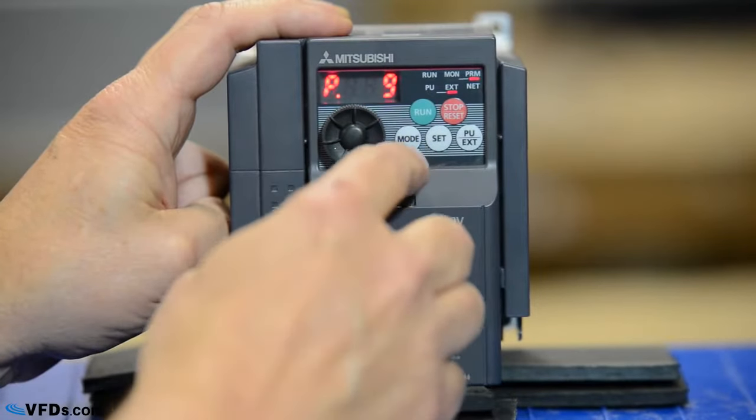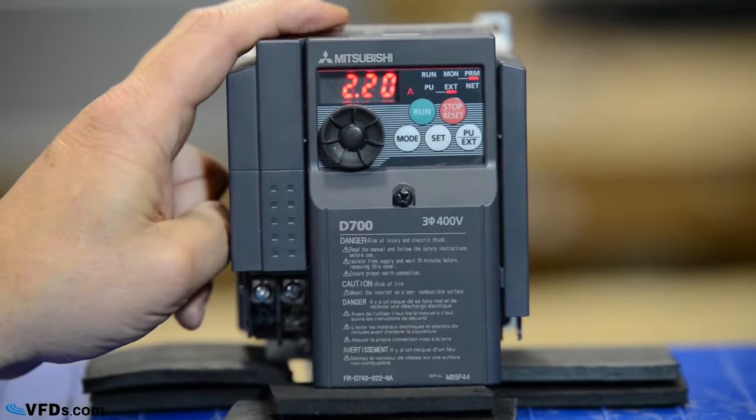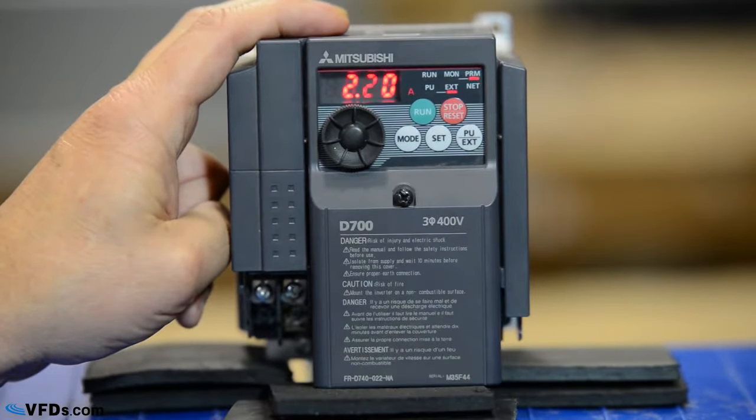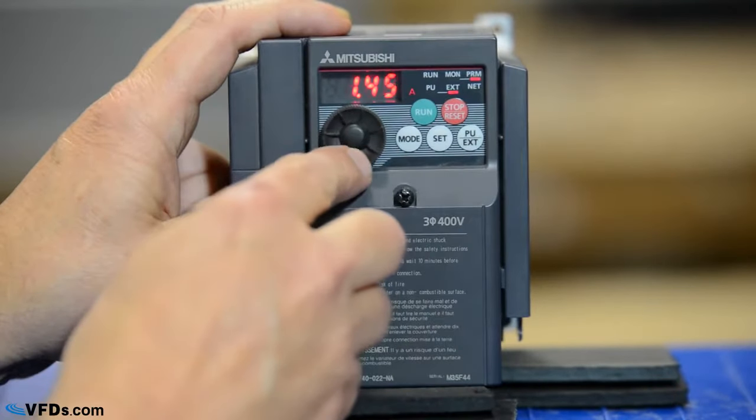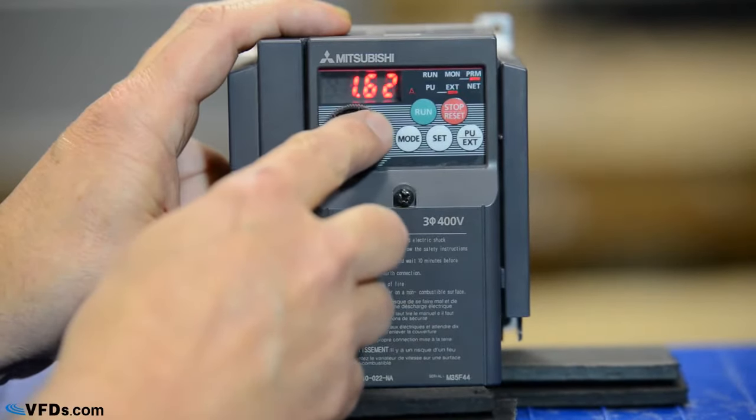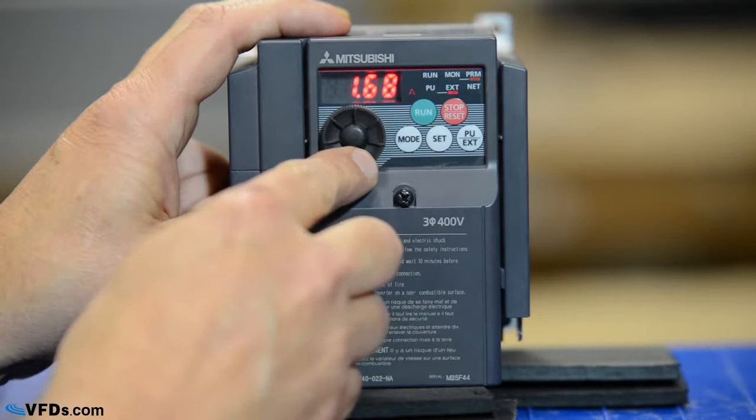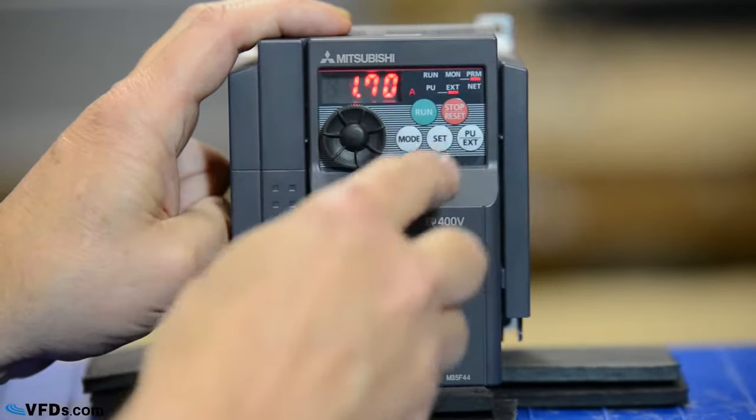Finally, parameter 9 is my motor nameplate amperage. My motor full load amps on this motor is 1.7 amps, so I'll simply change that down here to 1.7 amps, knowing that the drive will now be able to protect my motor from overloads.